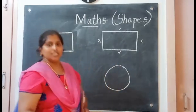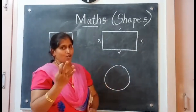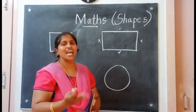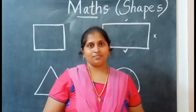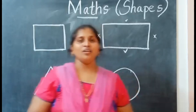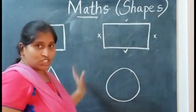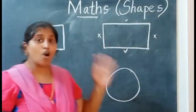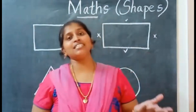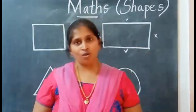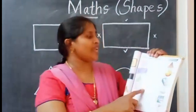Circle — does circle have a side? No, it doesn't have a side. Circle has no sides. Now you understood about the four shapes: how many sides each has and whether the sides are equal or not. Now we are going to do an activity.